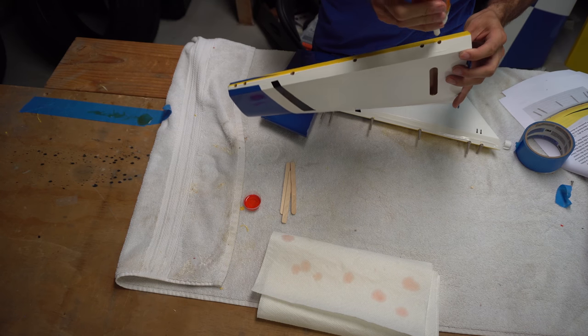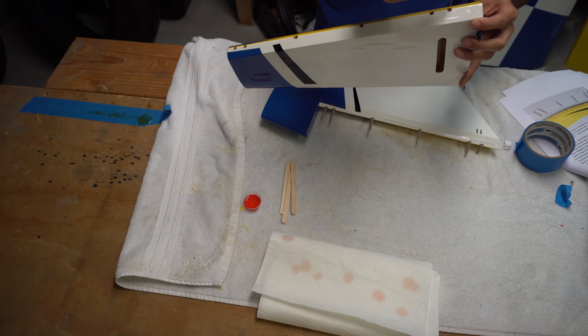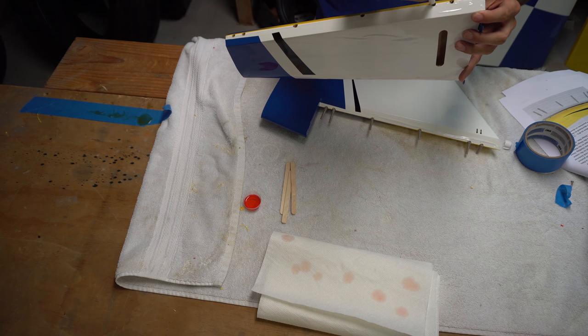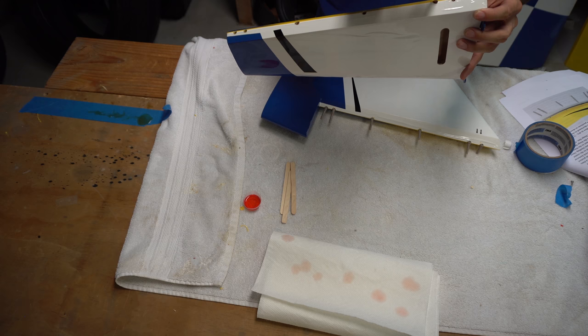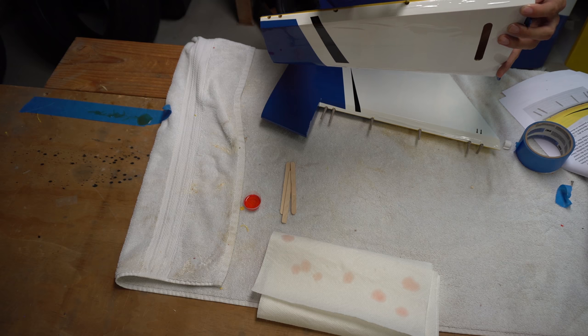I'm going to take the horizontal stab and take the Gorilla Glue and fill in the holes like we did on the elevator with the Gorilla Glue. Again, it only takes about a pea-sized amount of Gorilla Glue in each hole. Once it's completed, I'm going to lay the stab down flat on the table.